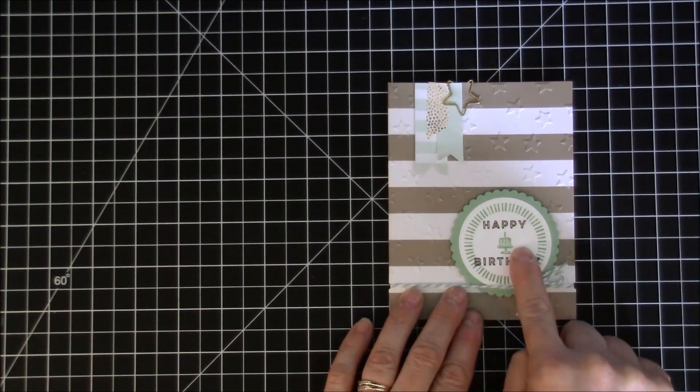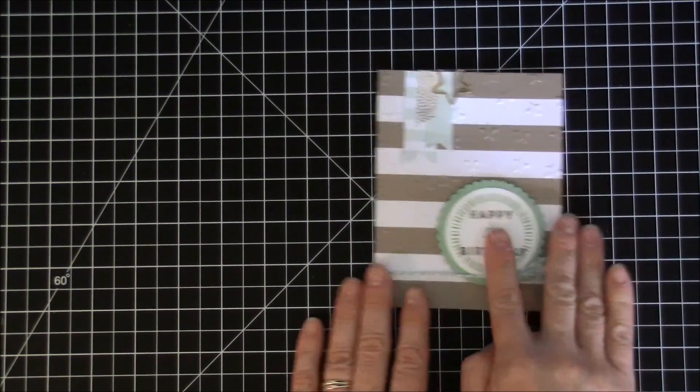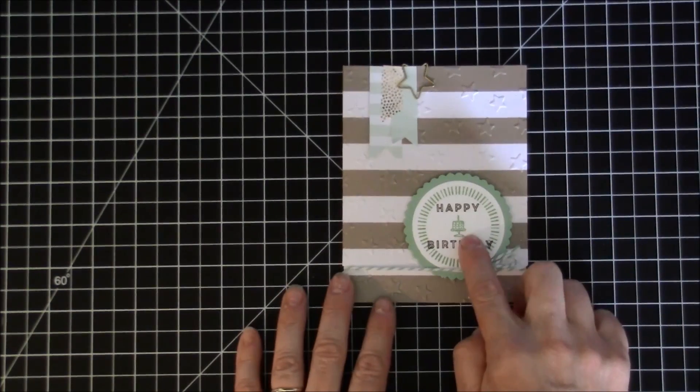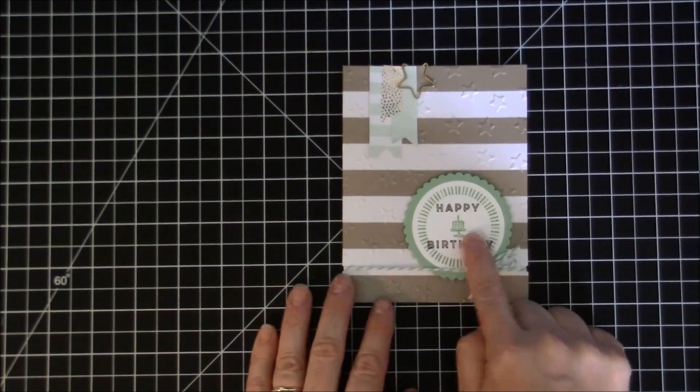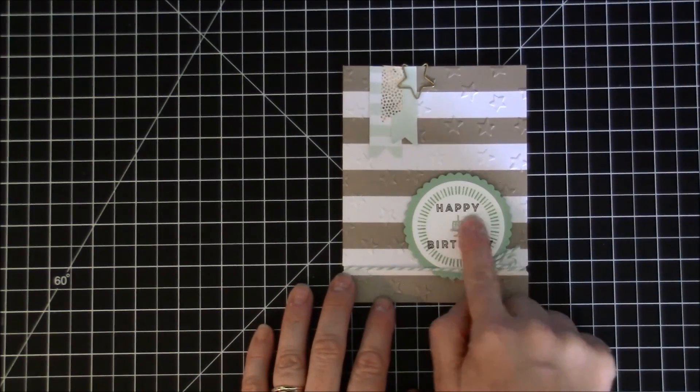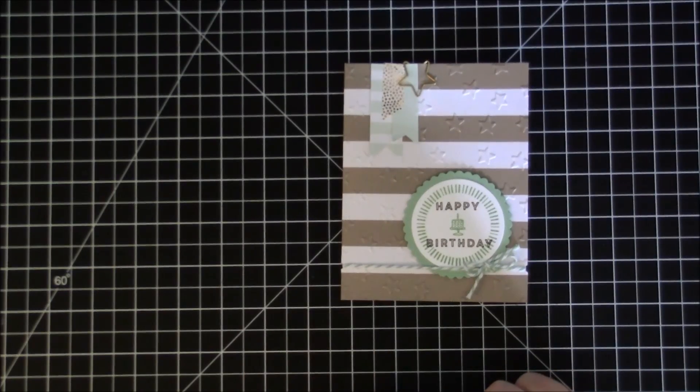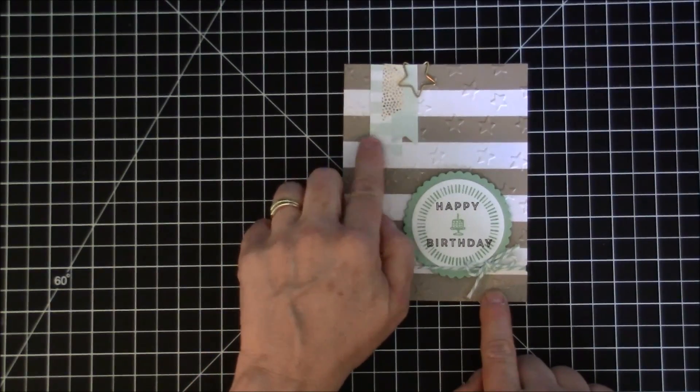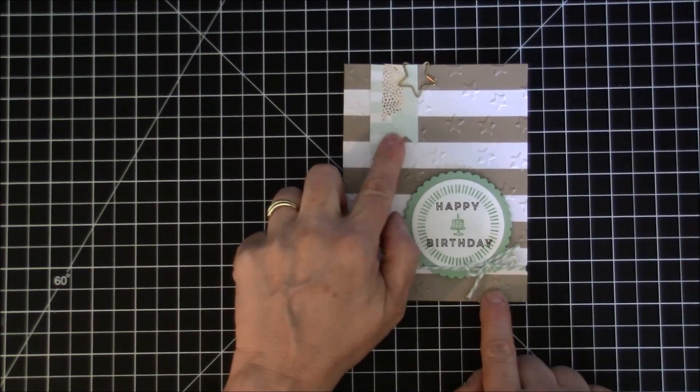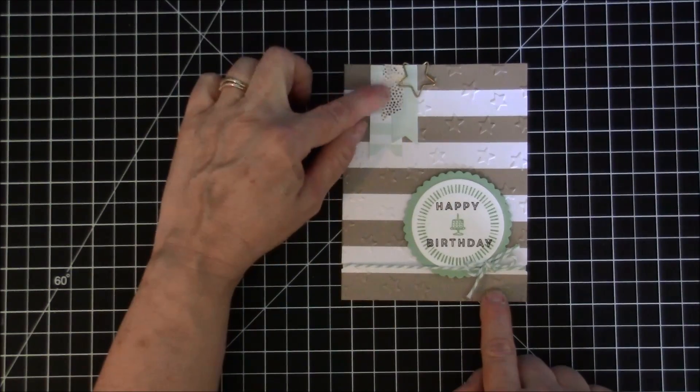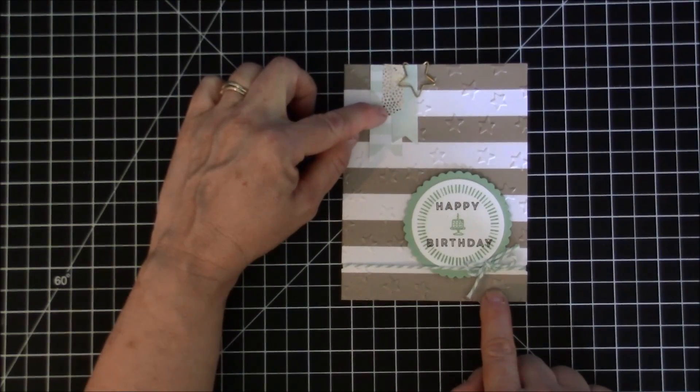This little cake is from the stamp set from last month's paper pumpkin, so that is not with this stamp set, it's from last month. But you could use anything from your stash here to put a little symbol in there, you could use another little star or something like that. Then from my stash I found some other matching paper that I just made these little banners.